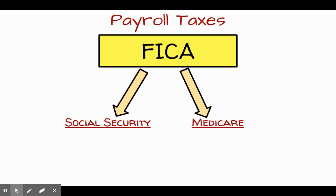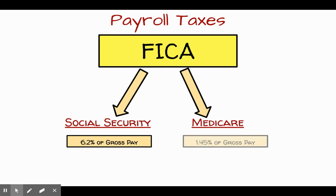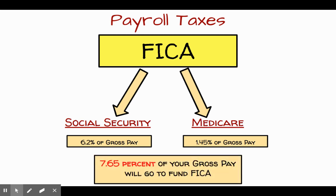So how do we calculate this payroll tax? Social security is going to be 6.2% of your gross pay. Your employer will also contribute 6.2%, but we're focusing on us as the individual. Medicare will be 1.45% of your gross pay, and your employer would also match that with a 1.45% contribution. In total, 7.65% of your gross pay will be removed as a payroll tax to fund FICA.